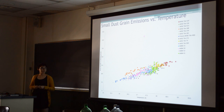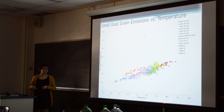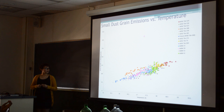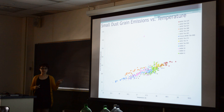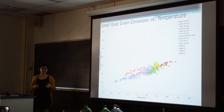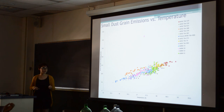One of our first results was this plot. Here we have the temperature from the temperature map, and here we have the normalized W3 data, normalized using the EB-V. We see a strong linear correlation between the temperature and the small dust grain emissions — which is what this normalized W3 represents. This tells us that in areas with higher energy density, indicated by higher temperature, we see more of these small dust grain emissions.